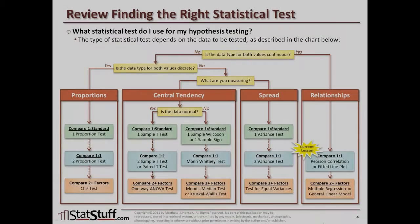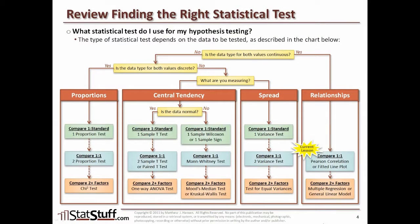Let's review the chart for finding the right statistical test and where the Pearson correlation and fitted line plot fit in. Looking at the familiar drill-down, we start by asking: is the data type for both values continuous? When they both are, we go down the path for relationship-type testing. When comparing two values one with each other, the test we use would be a Pearson correlation or fitted line plot — the tests we'll cover in this lesson.